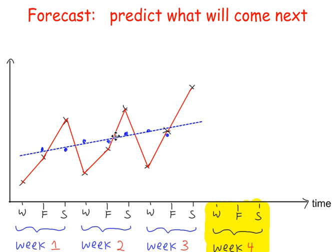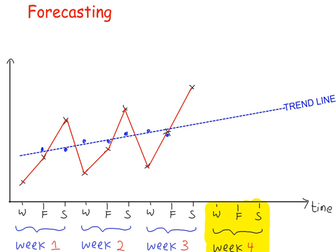We can use this time series to predict what will happen in the near future, so what will happen in week four. For forecasting, extend the trend line into the future, and then work out the seasonal effect for each of these three days. From there, you can do a forecast. Again, there are more detailed examples of how to do this in later videos. This is just an introduction.